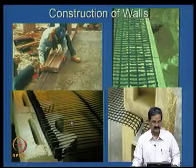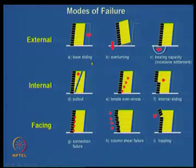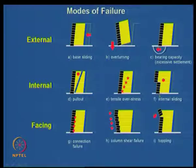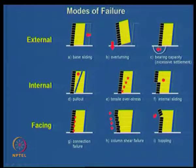The facing blocks are connected with shear keys and mechanical connectors. However, though the facing looks impressive, one must be careful — it can fail. Failure modes include base sliding, overturning, bearing capacity failure, internal sliding, connection failures, column-type failures, and toppling failures. I have seen a couple of such failures. One should look at all these possibilities carefully when designing segmental retaining walls.